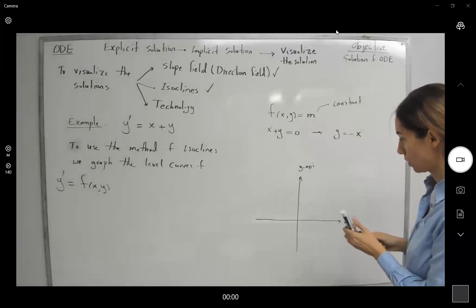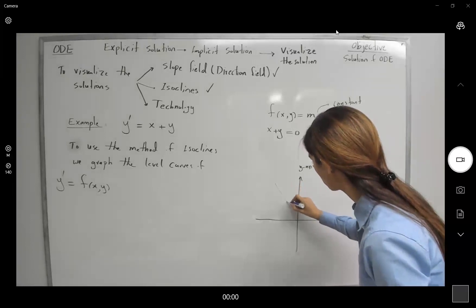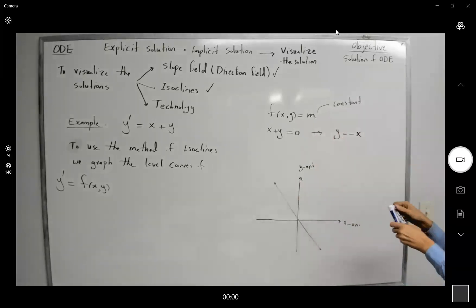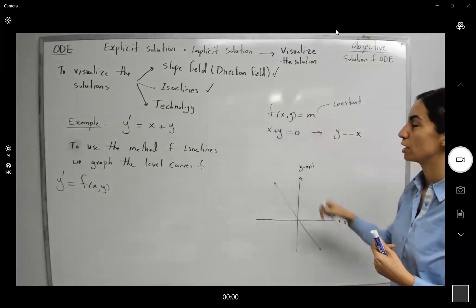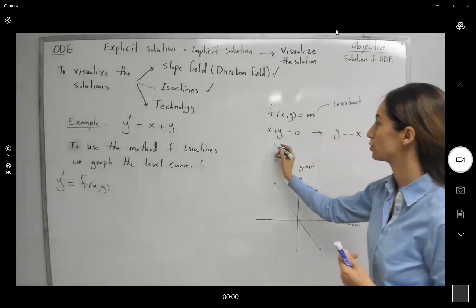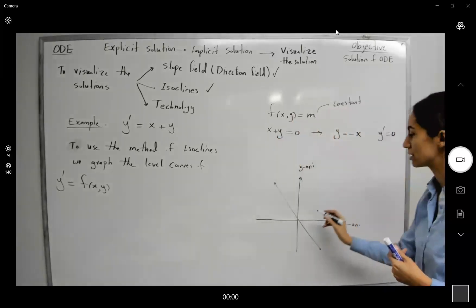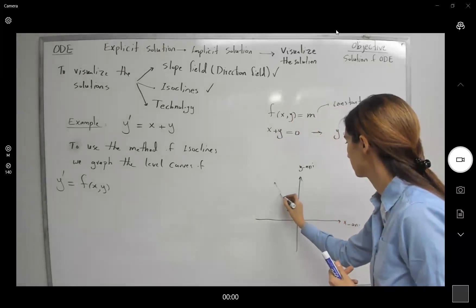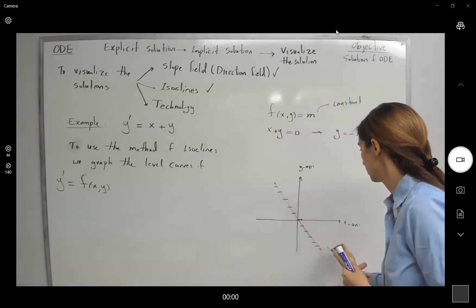So on this line, y equals to negative x, you're going to have the derivative equal to m. In this case, m is equal to zero. So y prime is equal to zero. You have a set of flat lines.